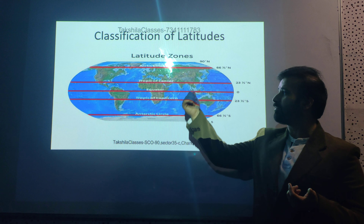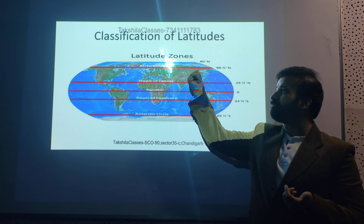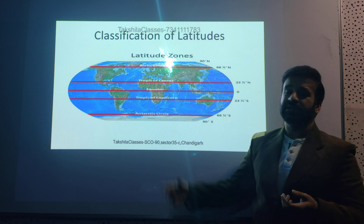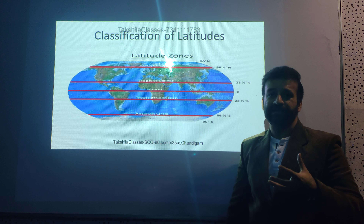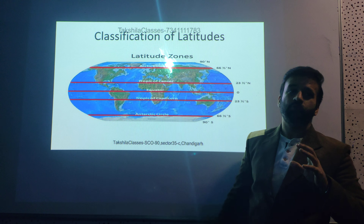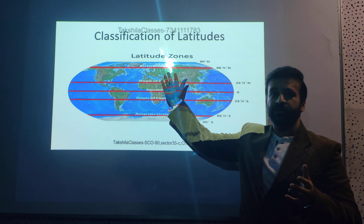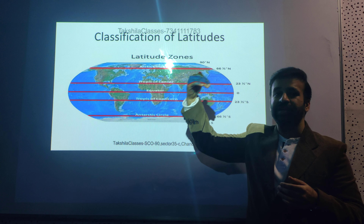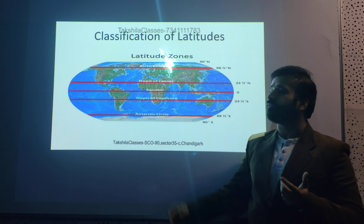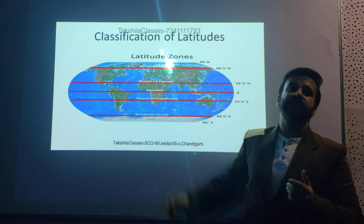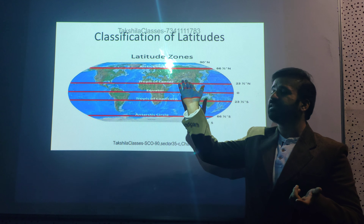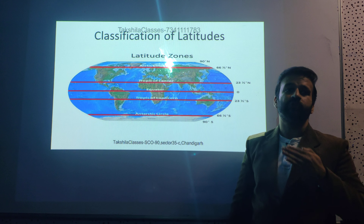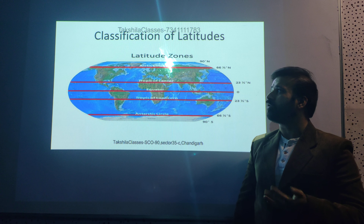66.5 degrees north is the Arctic Circle, 66.5 degrees south is the Antarctic Circle, and then we have the north and south poles — this is the polar zone. The tropical zone is also called the torrid zone, the temperate zone is the temperate zone, and the polar zone is the frigid zone. The tropical area is a heated area; the temperate area is cooler; the polar zone has snow all year.